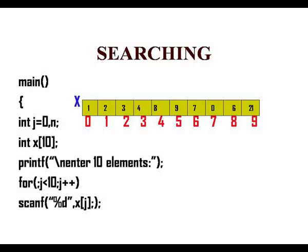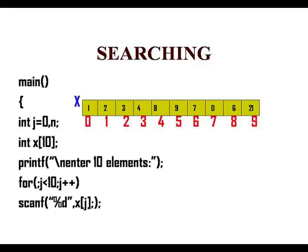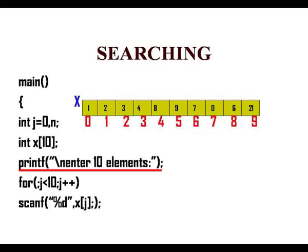We will see a simple program for searching the elements of an array. You have the main function. Here, I am declaring two integer variables n and j. j's value is initialized to 0, I am having an array x whose maximum value it can hold is 10. In this array I am going to have the values which are to be searched. Next I am printing enter the 10 elements and for j is less than 10 till j++ I am entering the values.